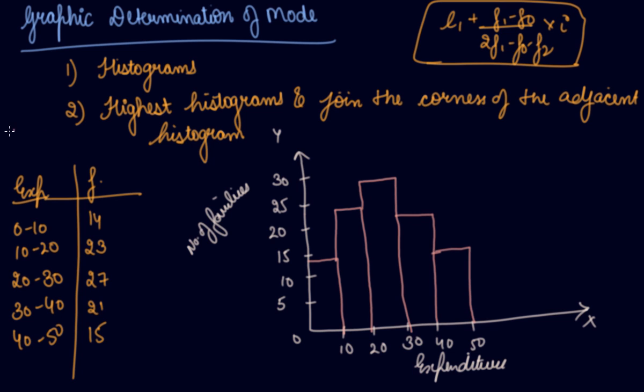Now you have the histograms. Identify the highest histogram—this is the adjacent histogram on each side, and these are the corners of your highest histogram.